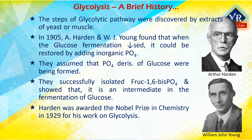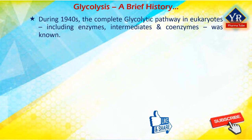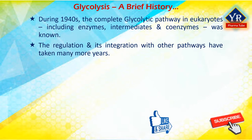Harden was awarded the Nobel Prize in Chemistry in 1929 for his work on glycolysis. By the 1940s, the complete glycolytic pathway in eukaryotes, including its enzymes, intermediates, and coenzymes, was known.